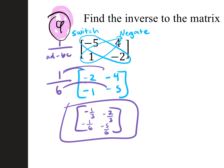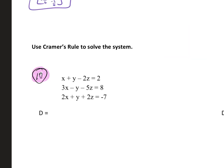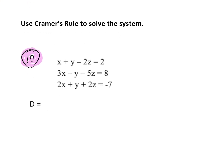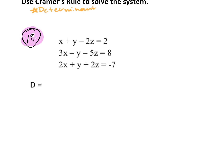Distributing one-sixth: negative two times one-sixth is negative one-third, negative four times one-sixth is negative two-thirds, negative one times one-sixth is negative one-sixth, negative five times one-sixth is negative five-sixths. That's our inverse. To check, multiply A times the inverse of A and also the inverse of A times A — both should give the identity matrix: one, zero, zero, one.